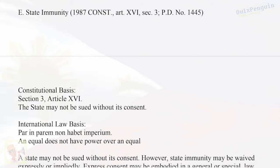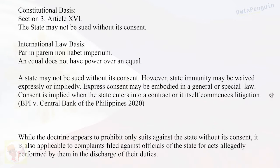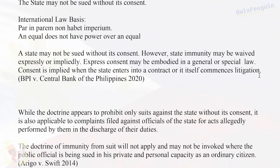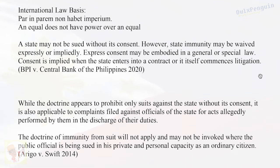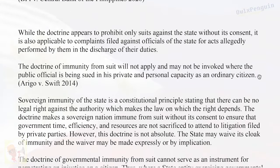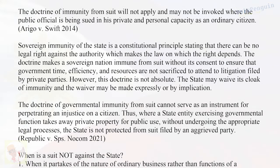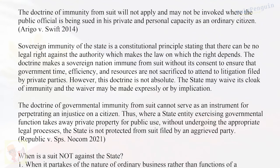E. State Immunity — 1987 Constitution, Art. 16, Sec. 3; PD No. 1445. Constitutional Basis: Section 3, Article 16 — the state may not be sued without its consent. International Law Basis: Par in Parem Non Habet Imperium — an equal does not have power over an equal. State immunity may be waived expressly or impliedly. Express consent may be embodied in a general or special law. Consent is implied when the state enters into a contract or itself commences litigation. (BPI v. Central Bank of the Philippines, 2020) The doctrine is also applicable to complaints filed against officials of the state for acts allegedly performed in the discharge of their duties. However, the doctrine will not apply where the public official is being sued in a private and personal capacity as an ordinary citizen. (Ergo v. Swift, 2014)